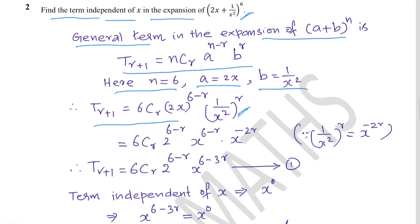Collecting constants: 6Cr · 2^(6−r). For x terms: x^(6−r) from the first term, and (1/x²)^r = x^(−2r) from the second term. Adding the indices: x^(6−r) · x^(−2r) = x^(6−3r). So equation 1 is: T(r+1) = 6Cr · 2^(6−r) · x^(6−3r).